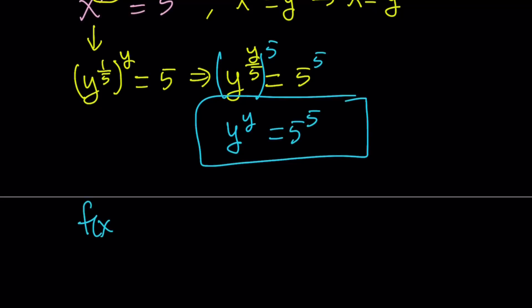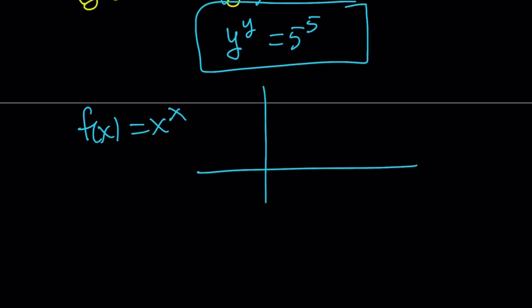We have to look at the graph of f of x equals x to the power x, which looks like the following. It kind of starts at 0, but 0 to the power 0 is problematic, so it starts with an open dot. Then it goes down first — between 0 and some value, roughly 1 over e — it decreases first and then increases and just keeps increasing. It goes through (1,1) but not (0,1), and there's going to be a minimum value.